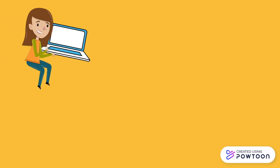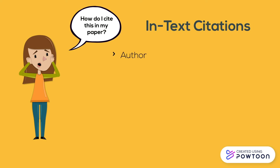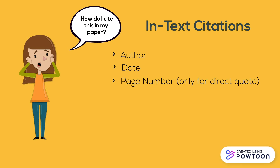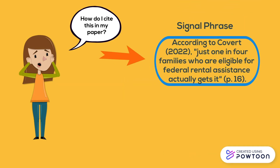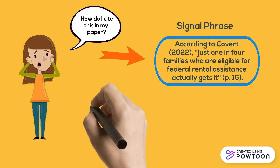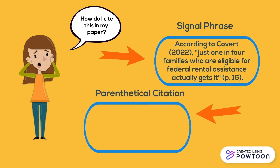Once you start writing your paper, you must also cite the ideas of the authors, whether it is a quote or paraphrase. For these in-text citations, you need the author, date, and the page number for a direct quote. A signal phrase is one way to do this, or you can put all the information in parentheses at the end of the sentence.